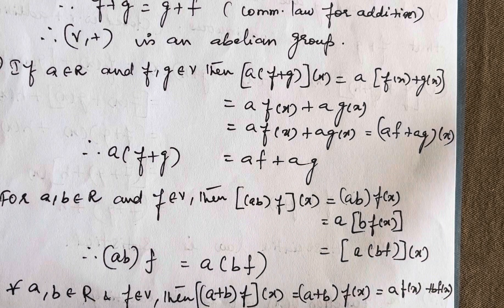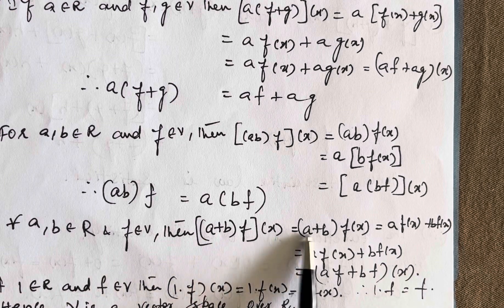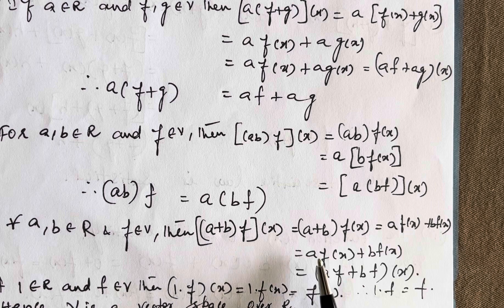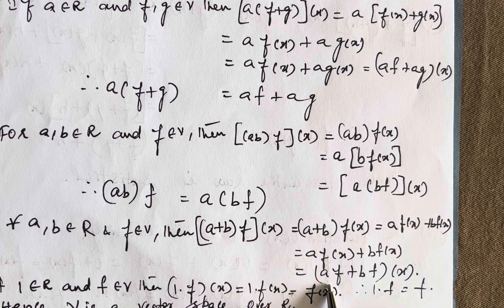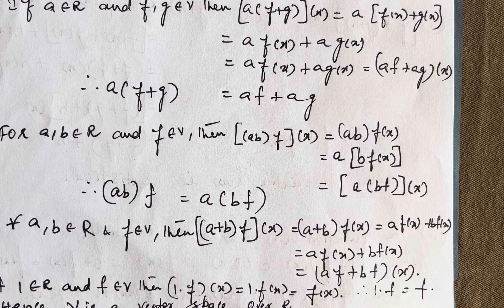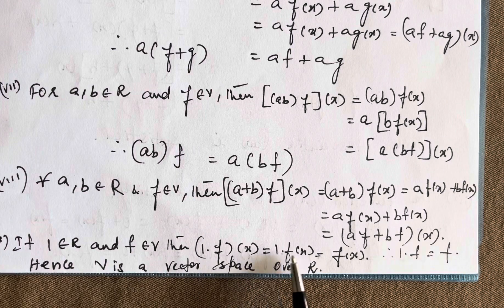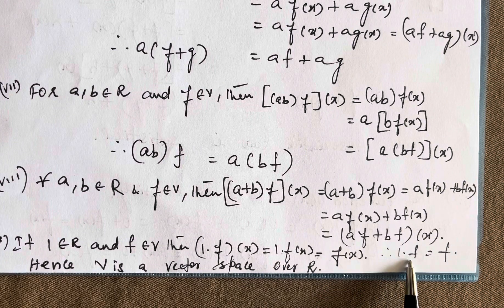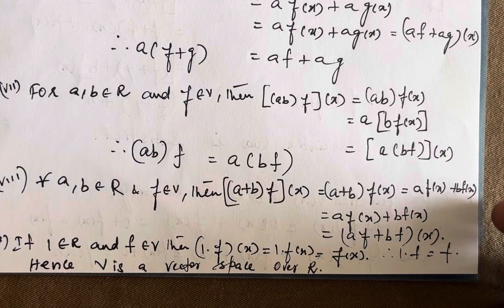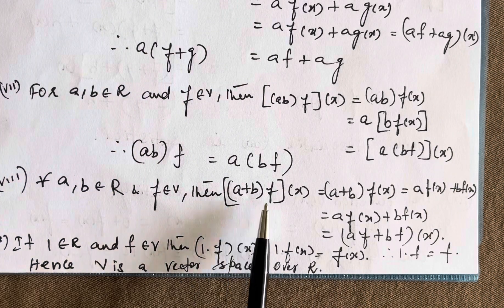The next distributive axiom: (a+b)·f(x) = a·f(x) + b·f(x) = (af+bf)(x). So (a+b)f = af + bf. And finally, 1 is the unit identity element in R. For f in V, 1·f = 1·f(x) = f(x), so 1·f = f. This satisfies the remaining axioms: (ab)f = a(bf), a(f+g) = af+ag, (a+b)f = af+bf, and 1·f = f.